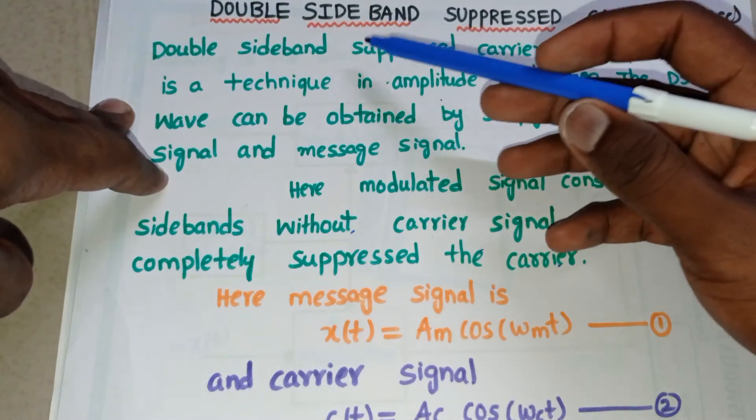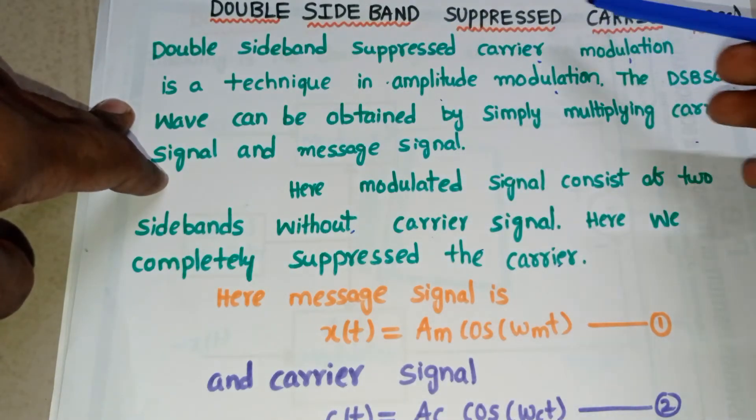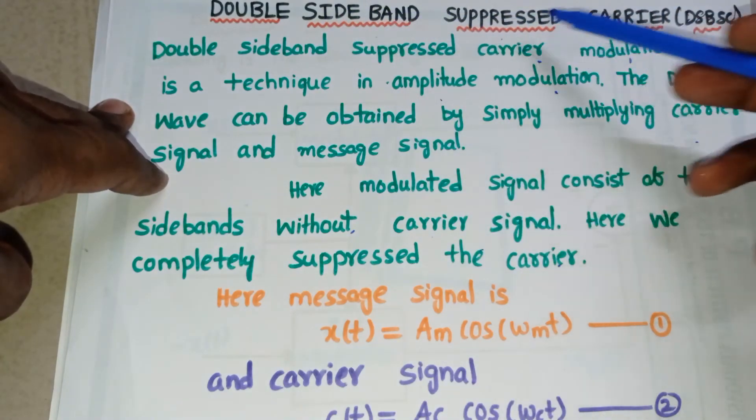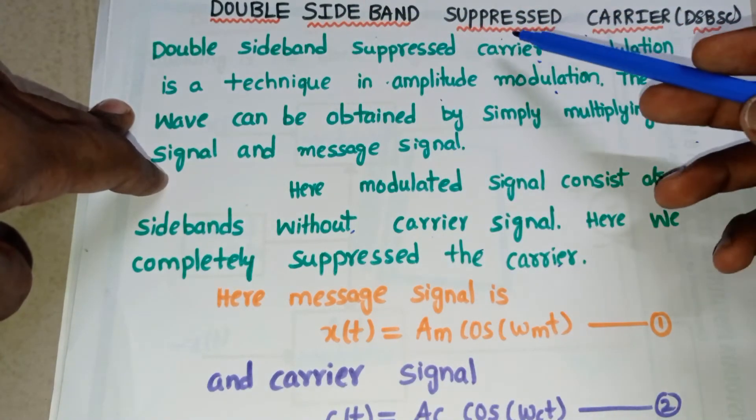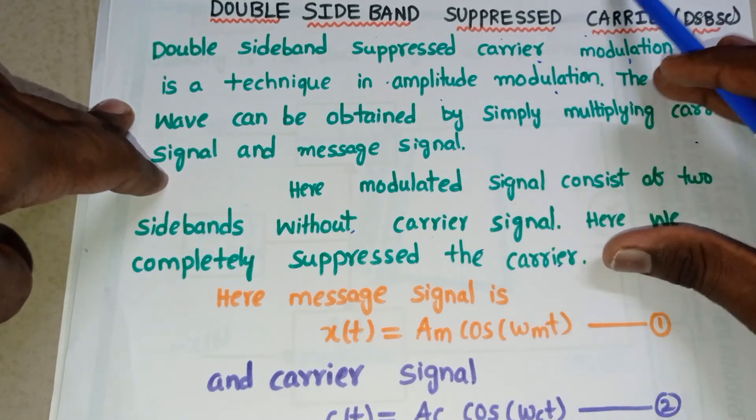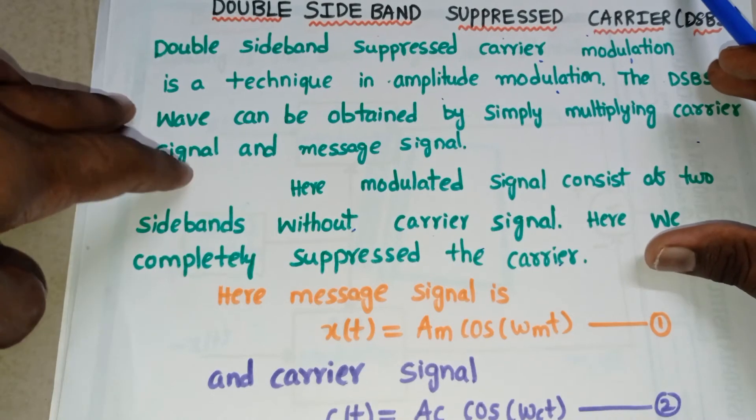As the name indicates, Double Sideband Suppressed Carrier means the modulated wave consists of two sidebands, but suppressed carrier means no carrier. Carrier is completely suppressed. This is the definition of Double Sideband Suppressed Carrier.